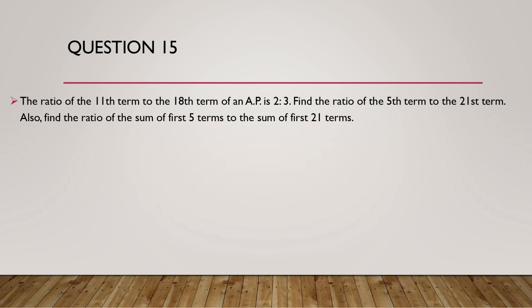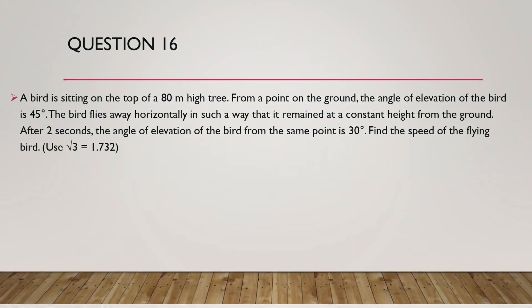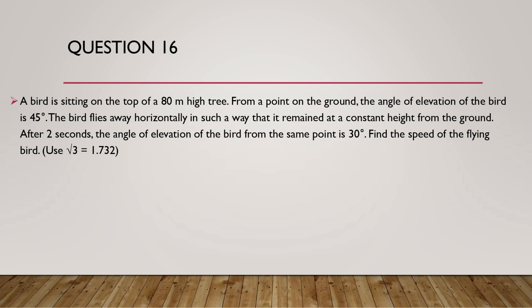Question 15. The ratio of 11th term to 18th term of an AP is 2 to 3. Find the ratio of 5th term to 21st term. Also find the ratio of sum of first 5 terms to sum of first 21 terms.